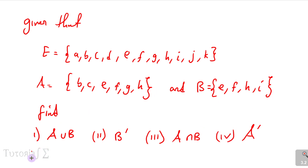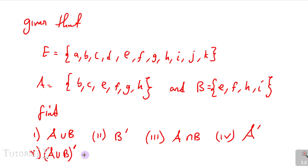Question 5: find A union B complement. This means first find A union B, then from that result, find which elements are not in A union B but are in the universal set. That is the complement of the union.